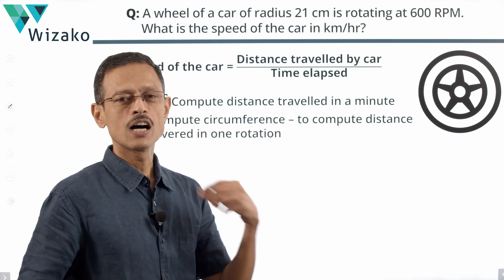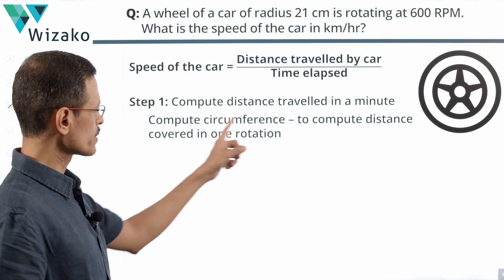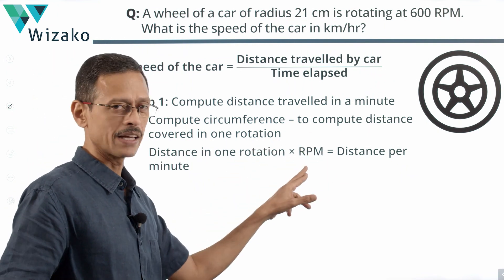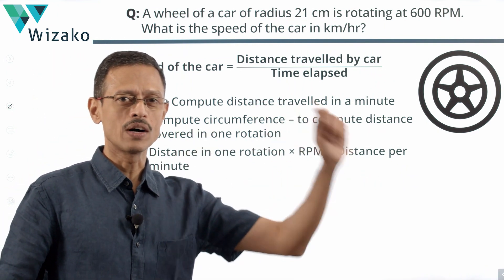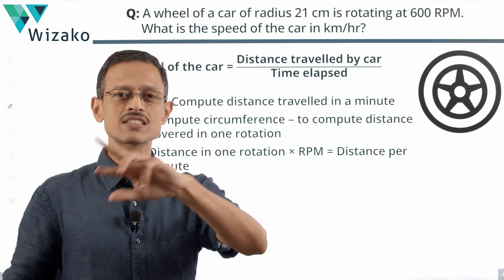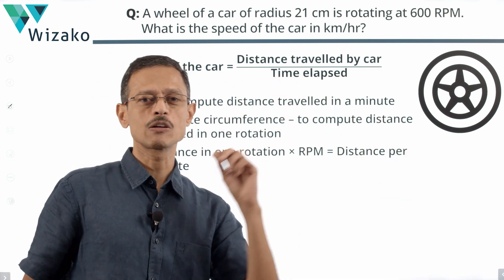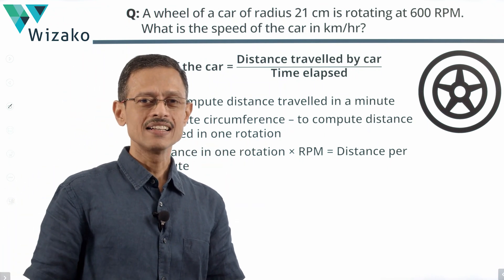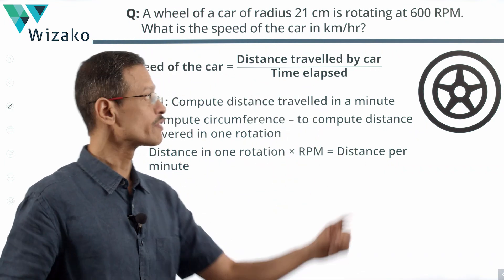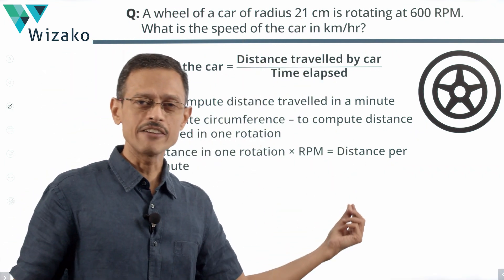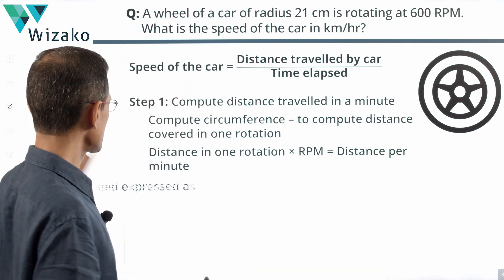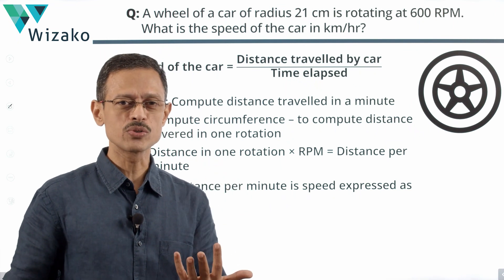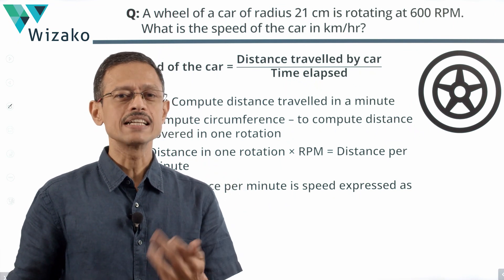Step one: compute the distance traveled in a minute. I'm going to compute the circumference — that gives the distance covered in one rotation. Multiply by the RPM and we get the distance traveled in a minute. We'll have the speed of the car in centimeters per minute, because the radius is expressed in centimeters. Then convert centimeters per minute into kilometers per hour to get the final answer.